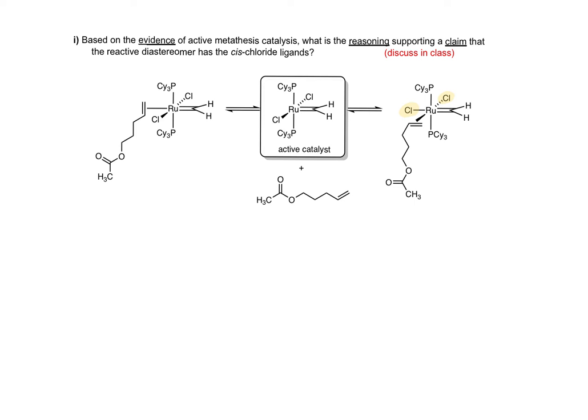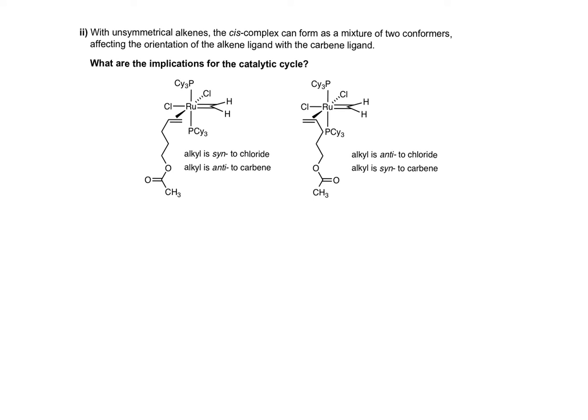Turning to page 4 of the worksheet, you may have noticed that I've shown the alkene ligand coordinated in a conformation where the alkyl group is closer to the chloride ligand and further from the carbene ligand. The alkyl is syn to chloride, anti to carbene. But it's reasonable to expect that the alkene collision with ruthenium might occur on the opposite face of the alkene so that the alkyl group is anti to the chloride and syn to the carbene. I'll work through the implications of that here for this second conformer.